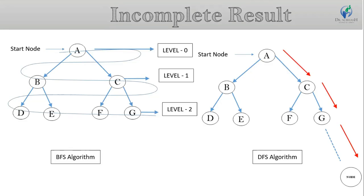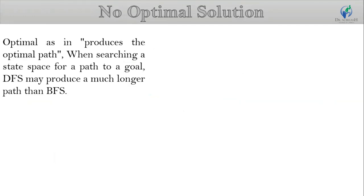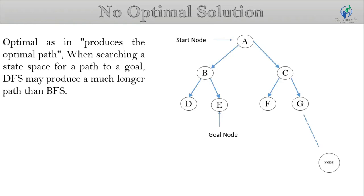DFS does not cover all the nodes and may not reach the goal node. Next point: DFS does not provide an optimal solution. Optimal means providing an optimal path or shortest path by cost when searching a state space for a path to a goal. DFS may provide a much longer path. For example, if our goal node is E but DFS selects path A to C, C to G, it follows this path until the last node, generating a longer path compared to BFS, because BFS searches level by level.